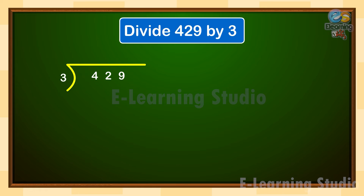Take the first digit of the dividend from the left and check if it is greater than or equal to the divisor. Here, 4 is greater than 3. 3 goes into 4 one time.